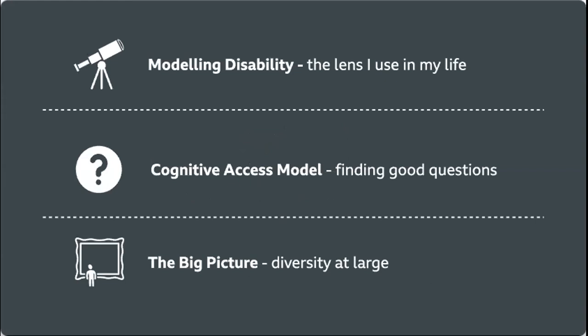OK, so this talk has three bits. I'm going to start off by talking about disability, how I model disability and the lenses that I use in my life. Then I'm going to talk about something called the cognitive accessibility model, which is basically a bunch of questions I think about when trying to make things more accessible to a wider range of people who may or may not have a cognitive impairment. And finally, I want to dabble in the big picture - diversity at large, where this is going.